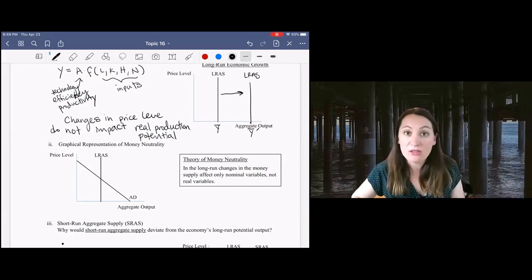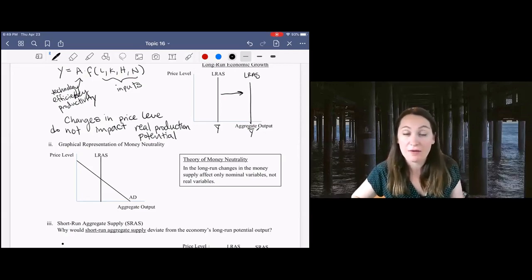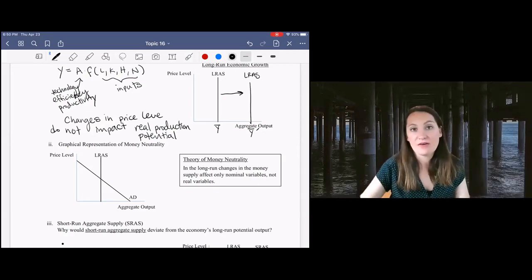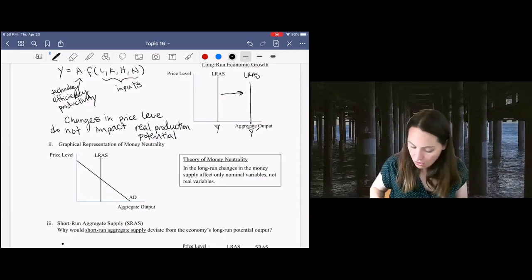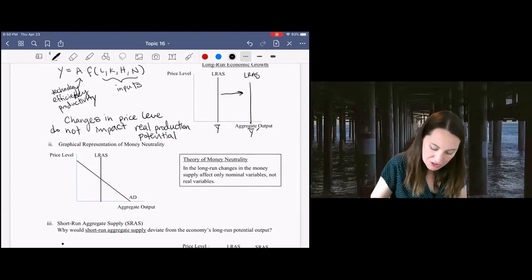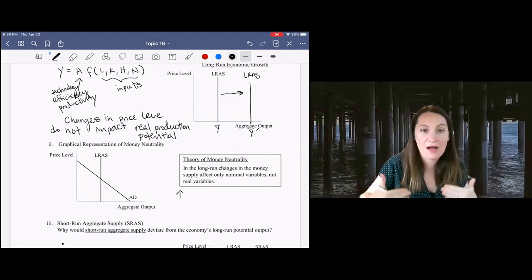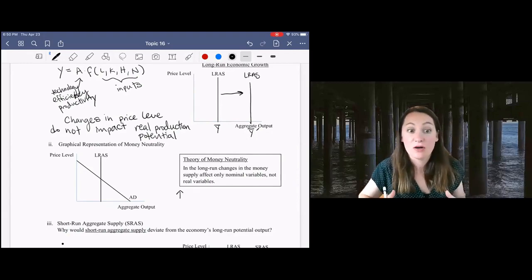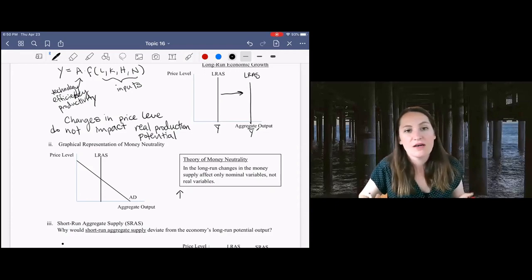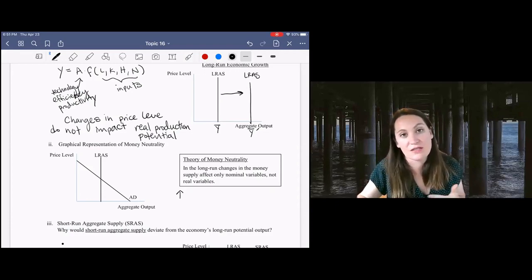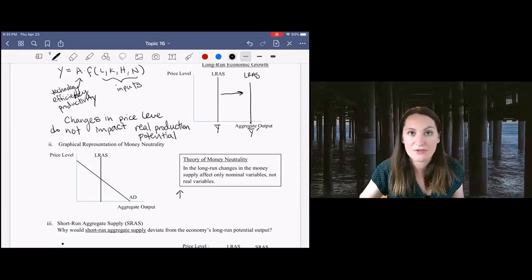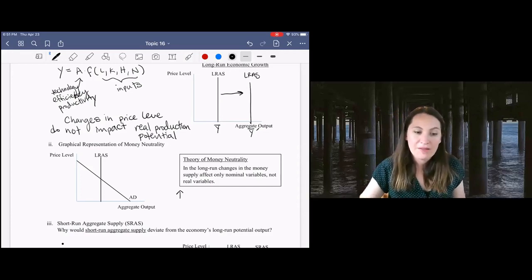Now, this is probably only true in the long run. We can show this theory of money neutrality by thinking about how a change in money supply would work in the context of this long run model. Of course, we're building this model mostly to understand short-term business cycle fluctuations, and we'll get to that when we introduce short-run aggregate supply. But for now,